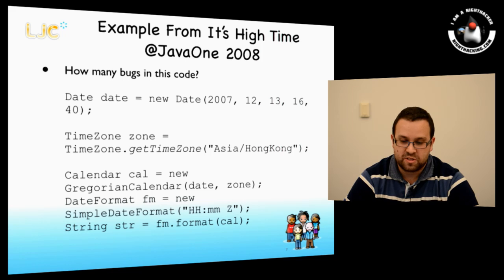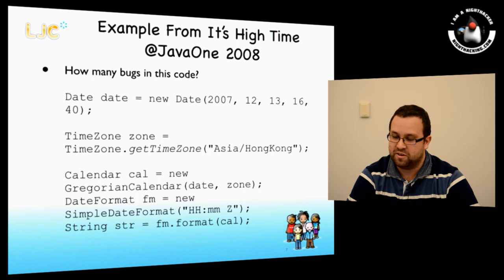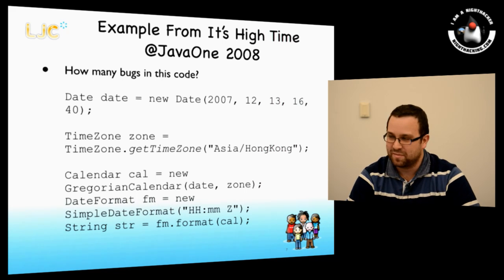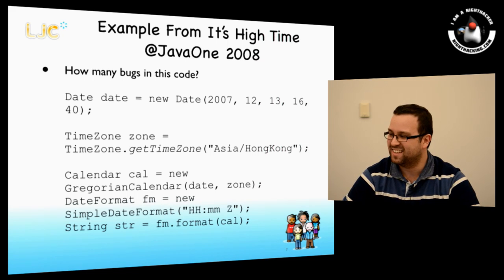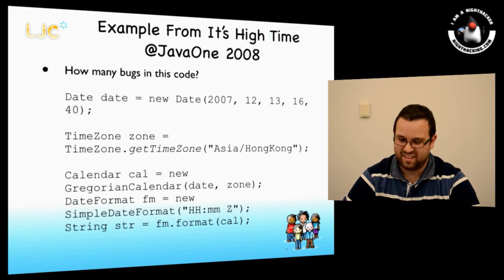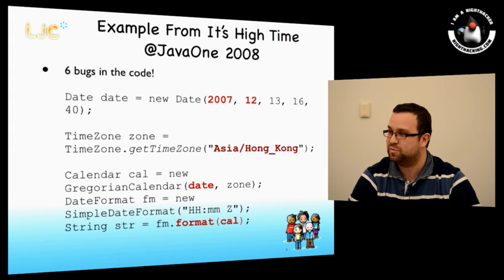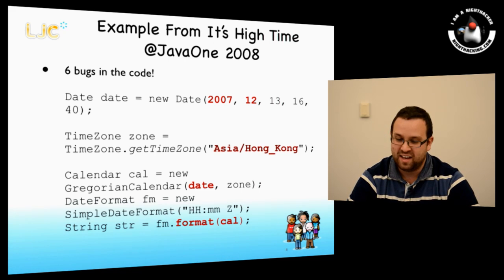So Stephen, I've got a question for you — an example from Java code from 2008. How many bugs can you find in this date-time code? Bearing in mind it's only a few lines. If I could remember the constructor for Date, I probably would be able to find a bug in that, but offhand I can't remember the order of the parameters. I'll skip on and show you there are actually six bugs in this code.